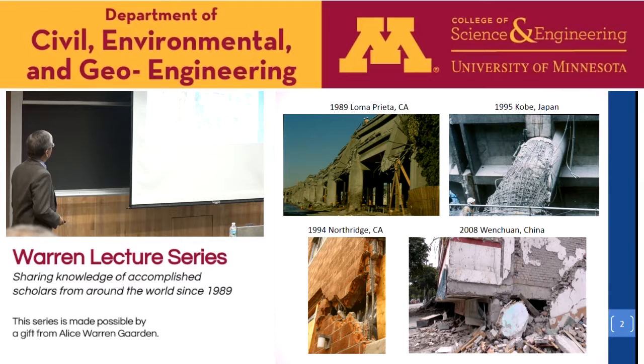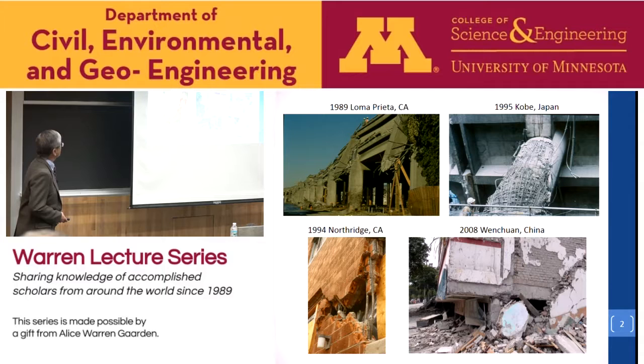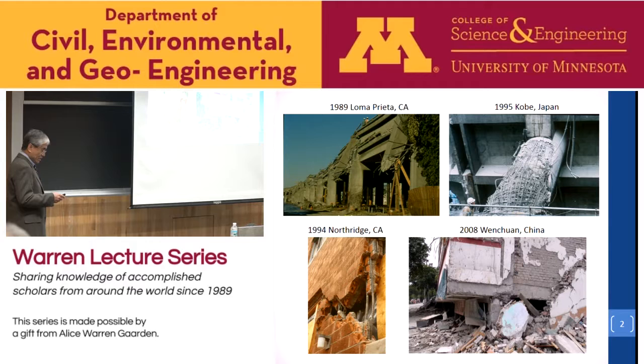The largest earthquake in California in recent years — one of the largest — is the 1989 Loma Prieta earthquake. I had just left California so I didn't experience it, but it caused a lot of damage to bridge structures. That was followed by the 1994 Northridge earthquake, which again caused damage to bridge structures and buildings. We know that earthquakes are very destructive.